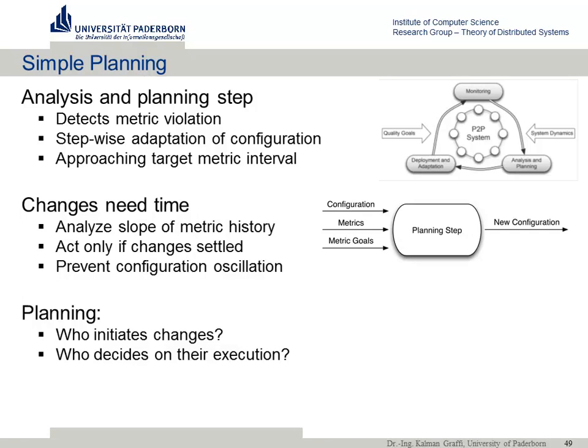We want to go one step at a time, not jump directly to fully autonomic changes. First, we want simple planning that makes it observable what is happening. We have the monitoring; now we need analysis and planning, adapted stepwise until a desired interval is reached. We assume several quality bounds for the peer-to-peer system — for example, a valid interval for look-up time — and only if it's missed do we want to change something.